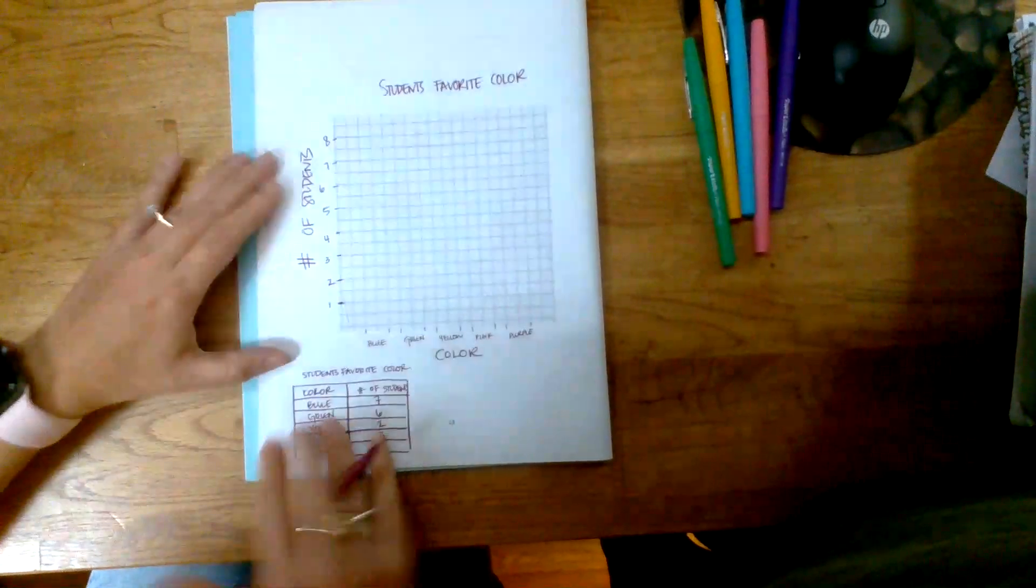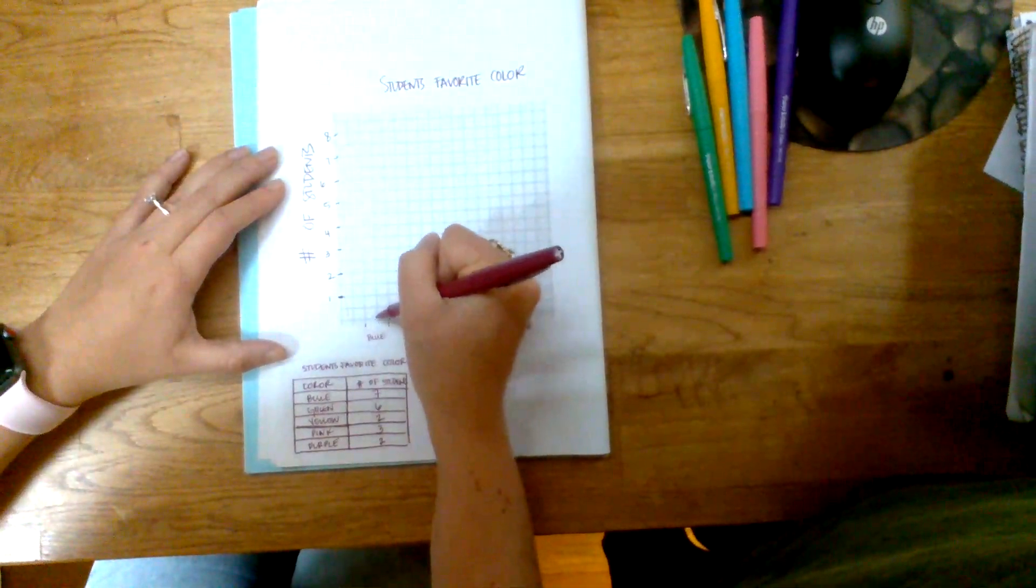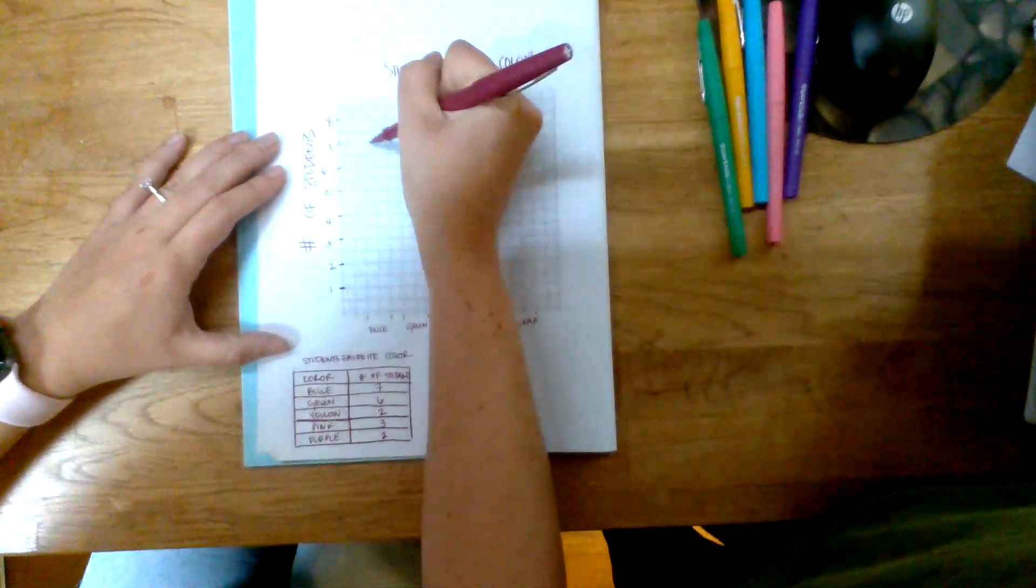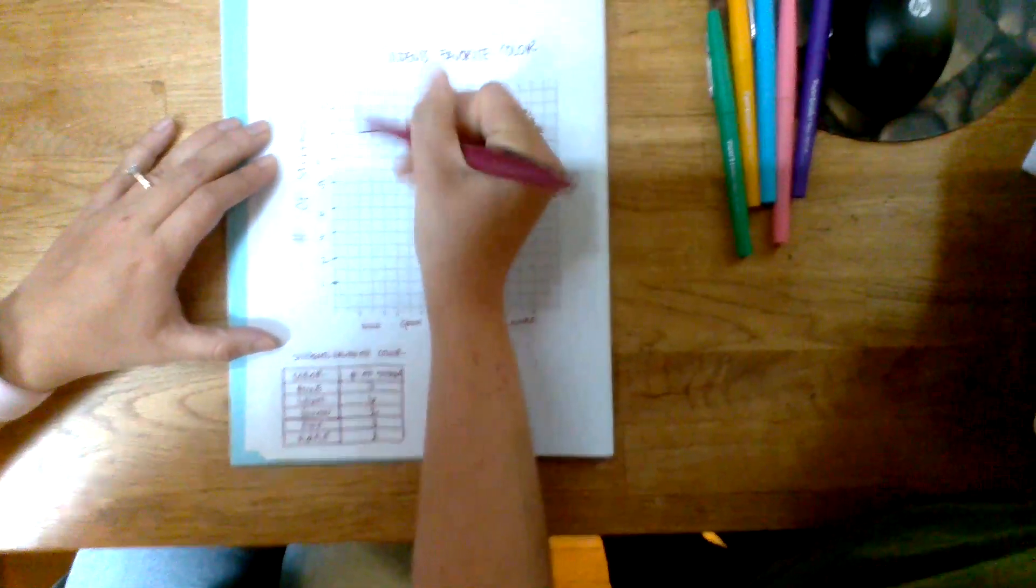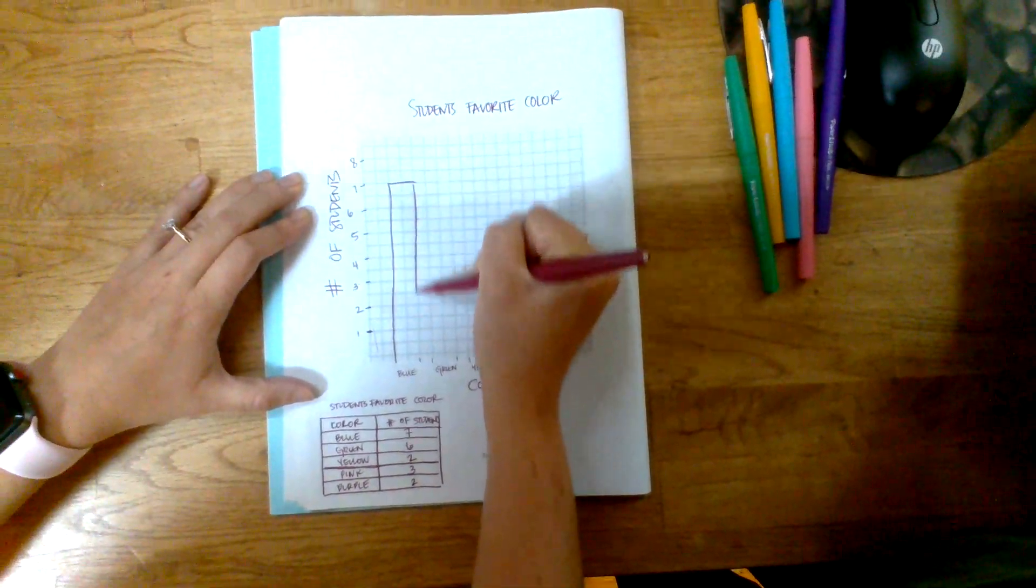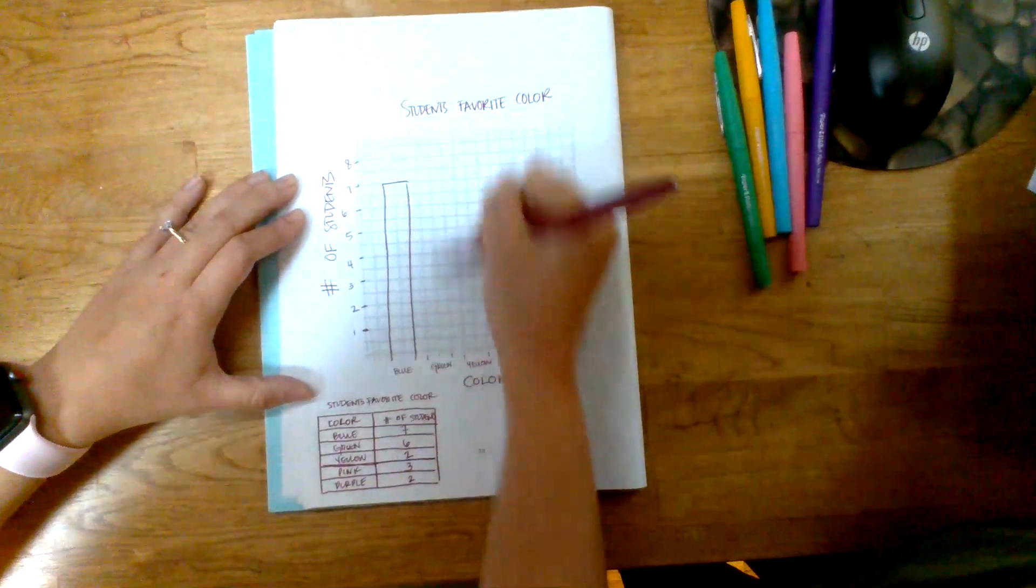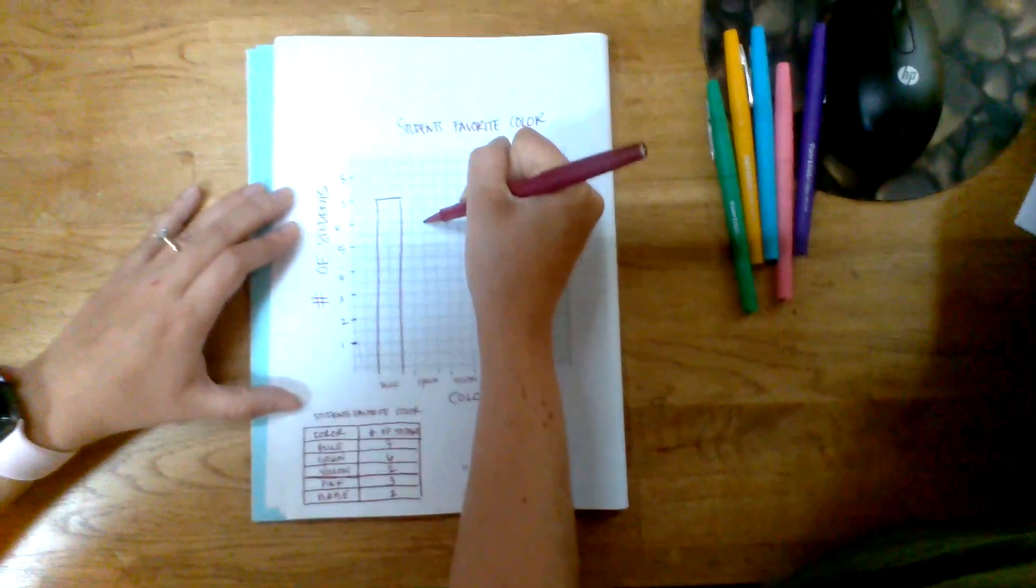I wanted to go one above, so now I'm going to build my bars. Blue was seven, so I'm going to go up to blue, up this middle line, and stop at seven. That's where my bar is going to end. Then you can go ahead and pull down your lines, and that'll be your first bar. Green went to six, so it's just below. I like to make sure I trail up so I don't mess up here. That'll be green.